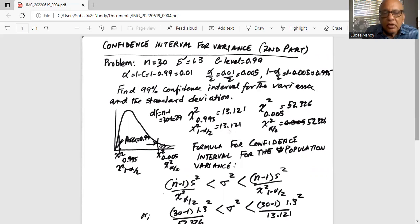Area in the center is 0.99. The unshaded region in the curve, this is the chi-square curve, is where most probably the variance, population variance will fall.